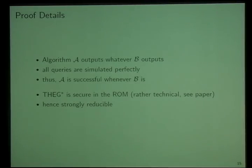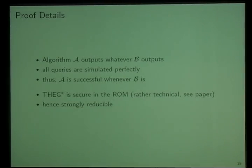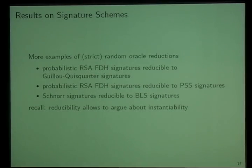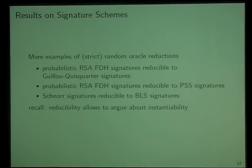The next step is to show that this variant is also secure on its own, which is a bit more technical — we'll have to look at the paper for that. By these two results we conclude that we also have strong reducibility. We have some more applications of this notion: a variant of probabilistic RSA-FDH signatures is reducible to GQ signatures; probabilistic RSA-FDH signatures are reducible to PSS signatures; and Schnorr signatures reduce to BLS signatures. These reductions are all strict. Since this notion allows us to argue about uninstantiability, this is very interesting for these schemes.